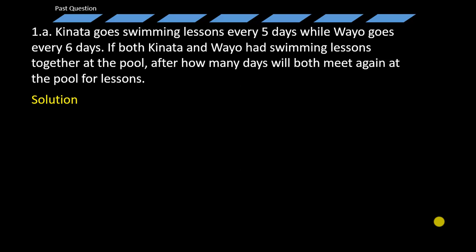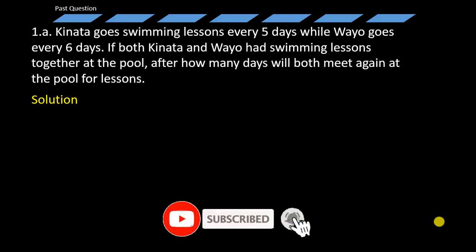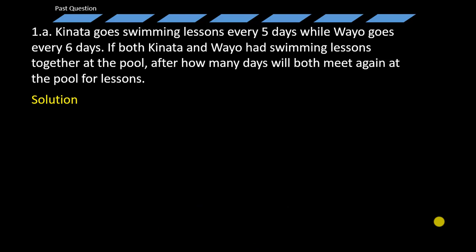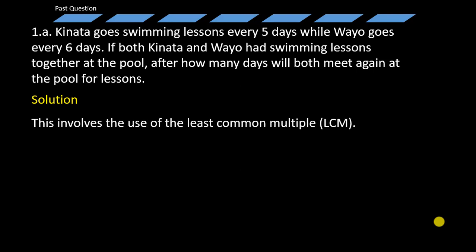And then the same for Wayu as well — you keep on adding six days consecutively. Now as you list the multiples of five and the multiples of six, as the days accumulate for both people, you would get to a point where we have a common number — a common day that both will actually go swimming. And that suggests this involves the use of the least common multiple, which is the LCM.